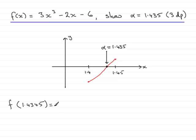If you pass this through your calculator, substituting x as 1.4345 into this equation, you find that you get a negative value, -0.01329.